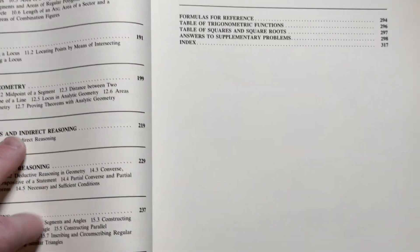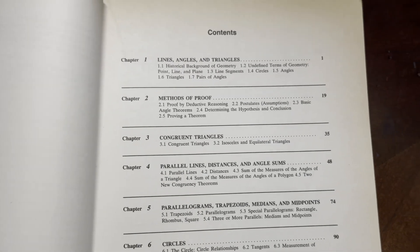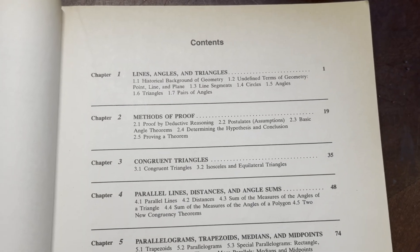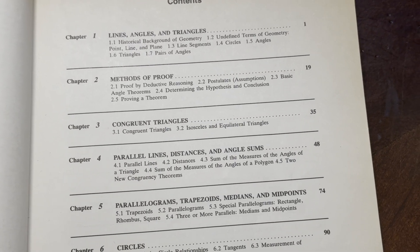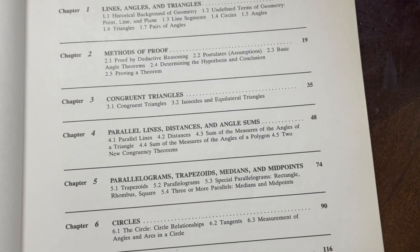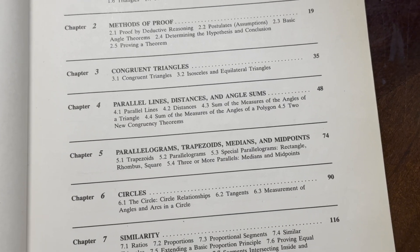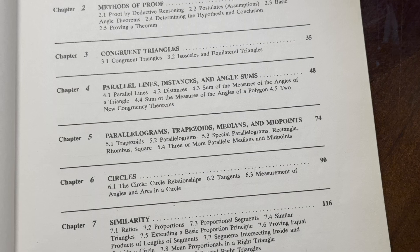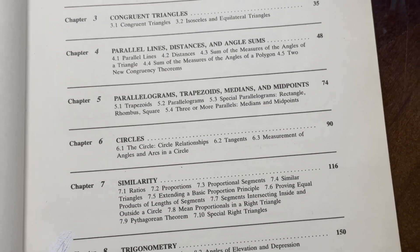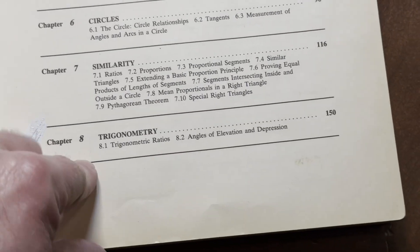So let's go back to the table of contents so you can see what it contains. It starts with lines, angles, and triangles, methods of proof, congruent triangles, parallel lines, distances, and angle sums, parallelograms, trapezoids, medians, and midpoints, circles, similarity, and then you have trigonometry.